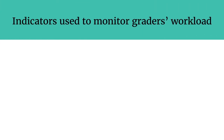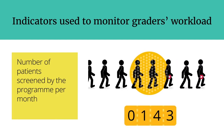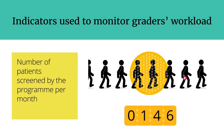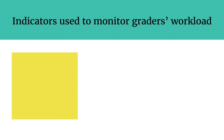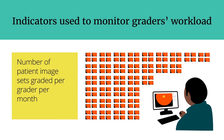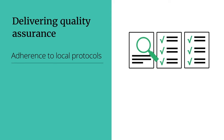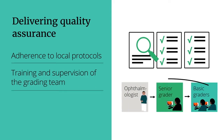Indicators used to monitor the grader's workload include: number of patients screened by the programme per month, which tracks the programme output; number of patient image sets graded per grader per month, which tracks each grader's output; and number of ungradable images requiring surveillance per month, which tracks the quality of the screening method being used. Delivering quality assurance in a DR screening service requires adherence to local protocols and ongoing training and supervision of the grading team.